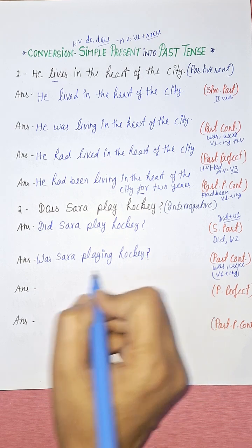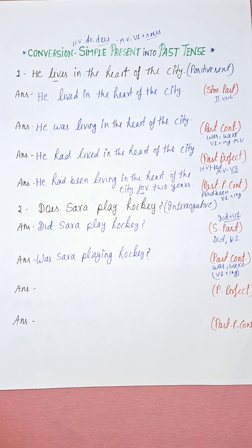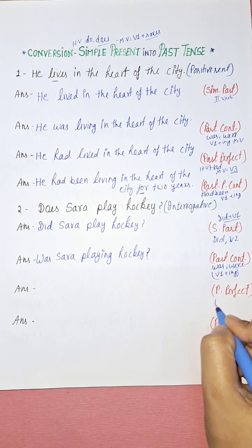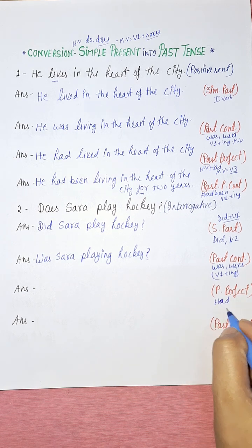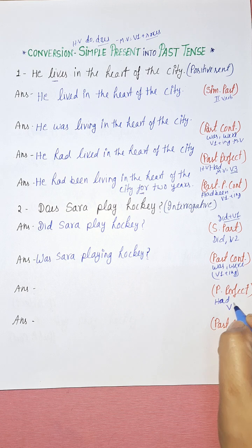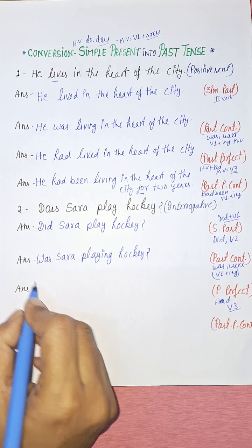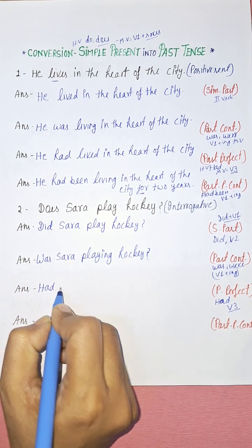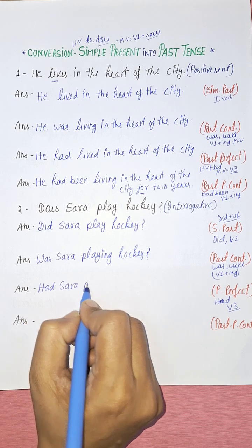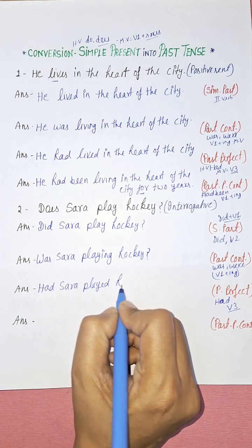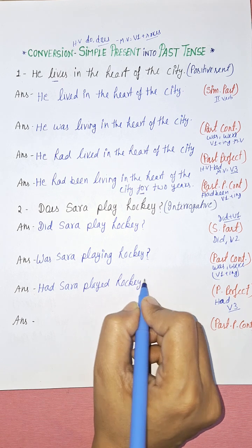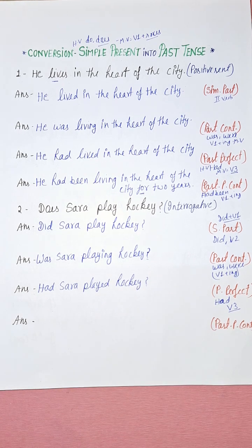Now past perfect. The helping verb is 'had' and as a main verb we use the V3 form, also known as past participle form. So 'does Sarah play hockey?' converts to 'Had Sarah played hockey?' — 'play' becomes 'played' in V3 form.